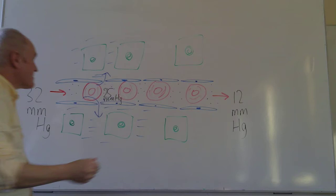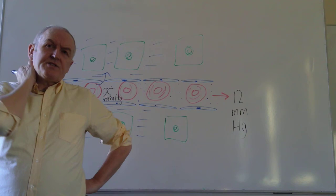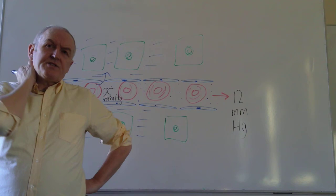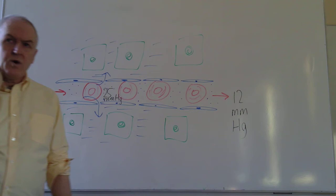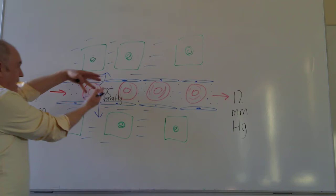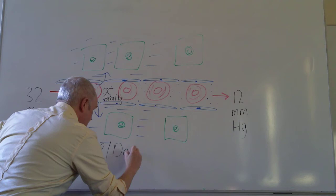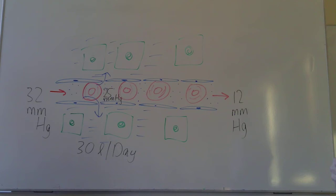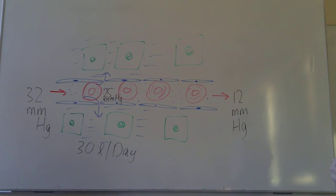Fluid collecting in this interstitial compartment is very good because it bathes all of the tissue cells. It is the essential medium through which diffusion of gases, nutrients, and waste products takes place. Throughout the body, about 30 litres of this tissue fluid is formed every day. We need to bathe the cells in water — it is the living matrix. Water is the diffusional medium. It is essential.